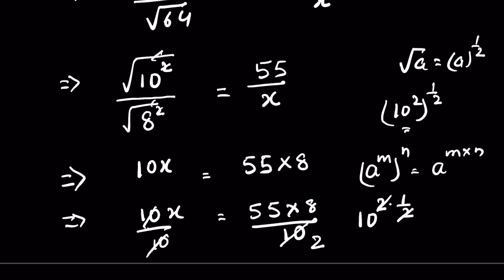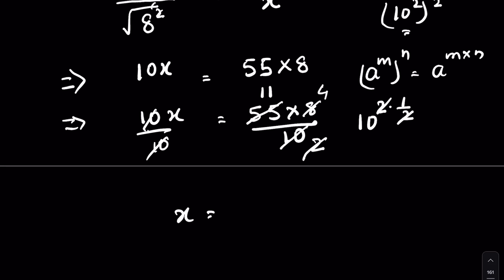5 times 2 is 10, and 5 times 11 is 55, so we divided 55 by 5 and 10 by 5. Now 2 times 4 is 8, so x is equal to 44. This is our answer.